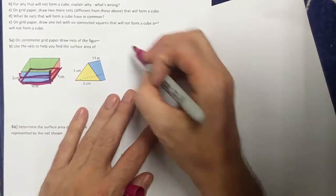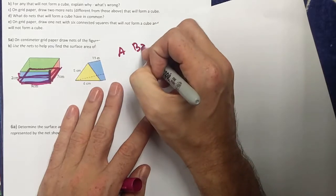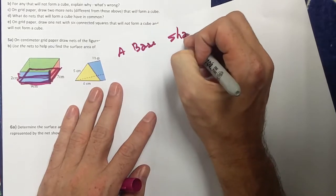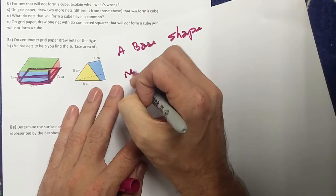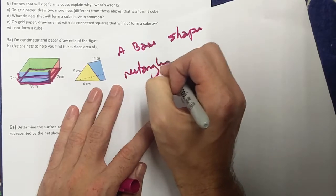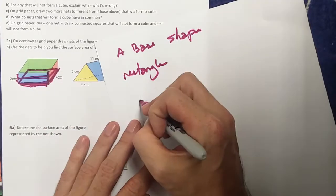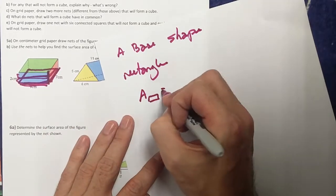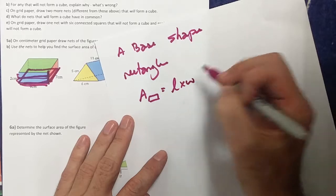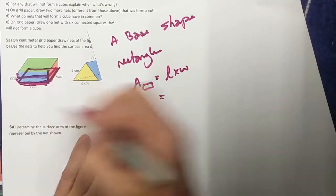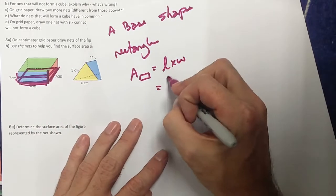So let's check this out. For this rectangular prism, I have to find the area of my base shape. My base shape is a rectangle. Well, what are the dimensions of this rectangle? I have a six by seven rectangle. So the area of a rectangle is, of course, length times width.